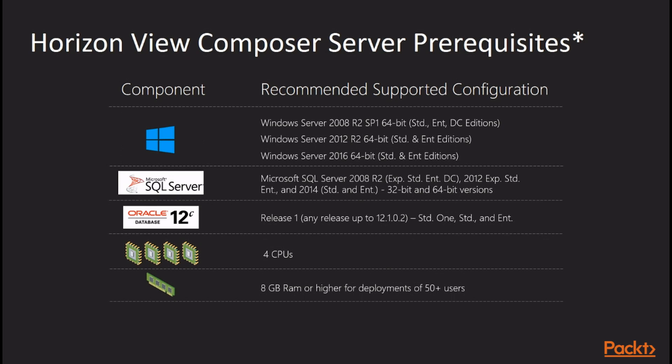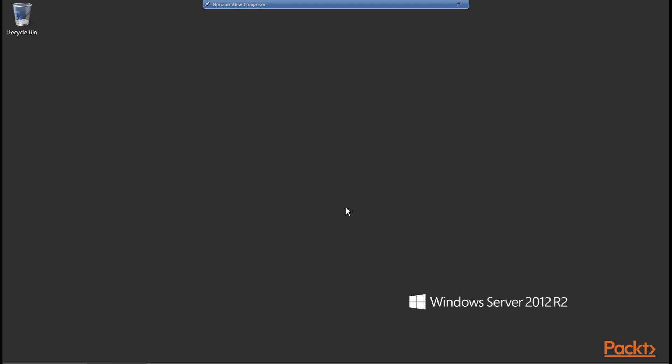We also need a minimum of 60GB disk space for the installation itself. This is the virtual machine that's already been built to this spec during the installation and setup part of this course, including the installation of the SQL database. Now it may seem a little odd that we're going to install the View Composer before we've even installed our first connection server. But the reason we're doing it in this order is that during the initial configuration of the first connection server, under the vCenter server configuration option, it's going to ask for some details about the View Composer server, so that the View Connection server can connect to Composer.